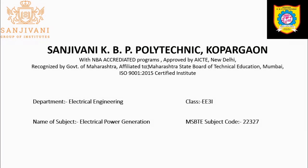In unit number one and unit number two of electrical power generation, we discussed energy generation using thermal power plants and hydroelectric power plants. There are certain limitations of these non-renewable sources of energy. Generating electricity with a thermal power plant results in a great amount of pollution, and the cost of energy generation is considerably high when you consider the setup and all related factors.